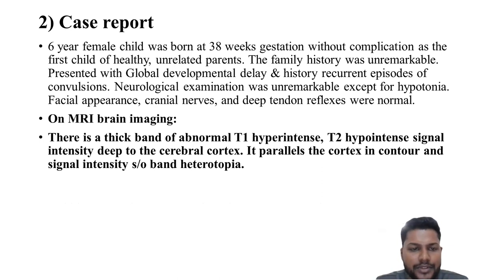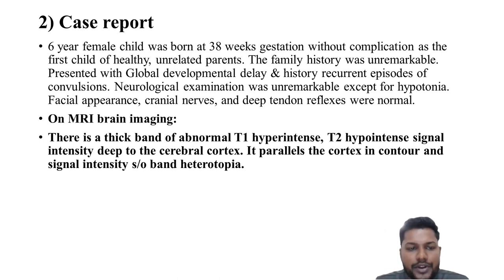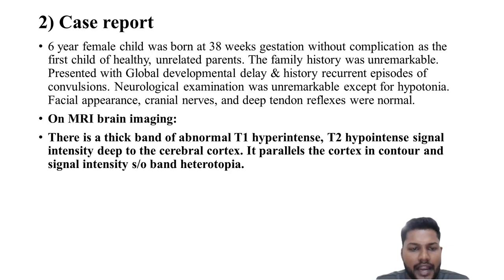On MRI imaging, there is a thick band of abnormal T1 hyperintense, T2 hyperintense signal intensity deep to the cerebral cortex. It parallels the cortex in contour and signal intensity, such as a band heterotopia.